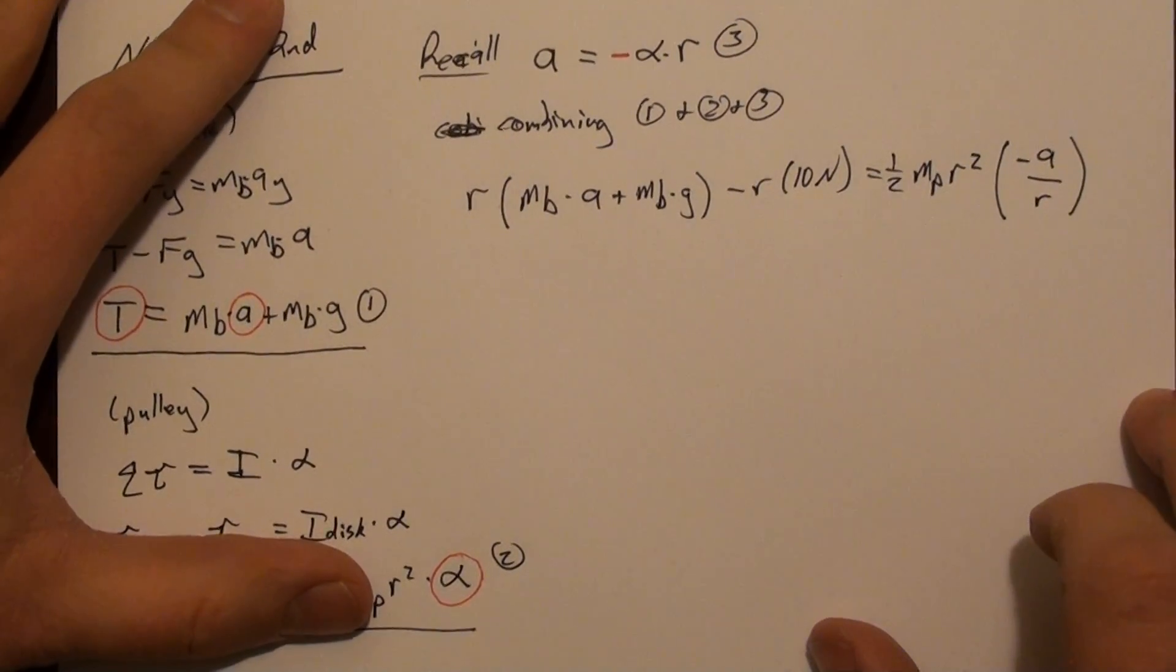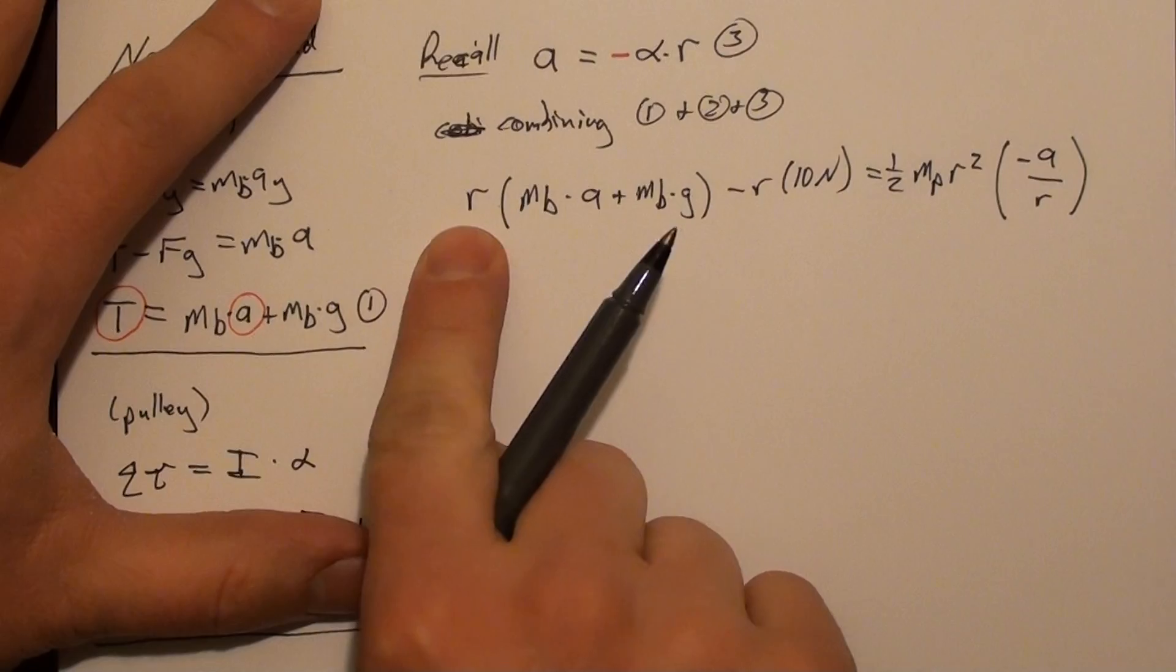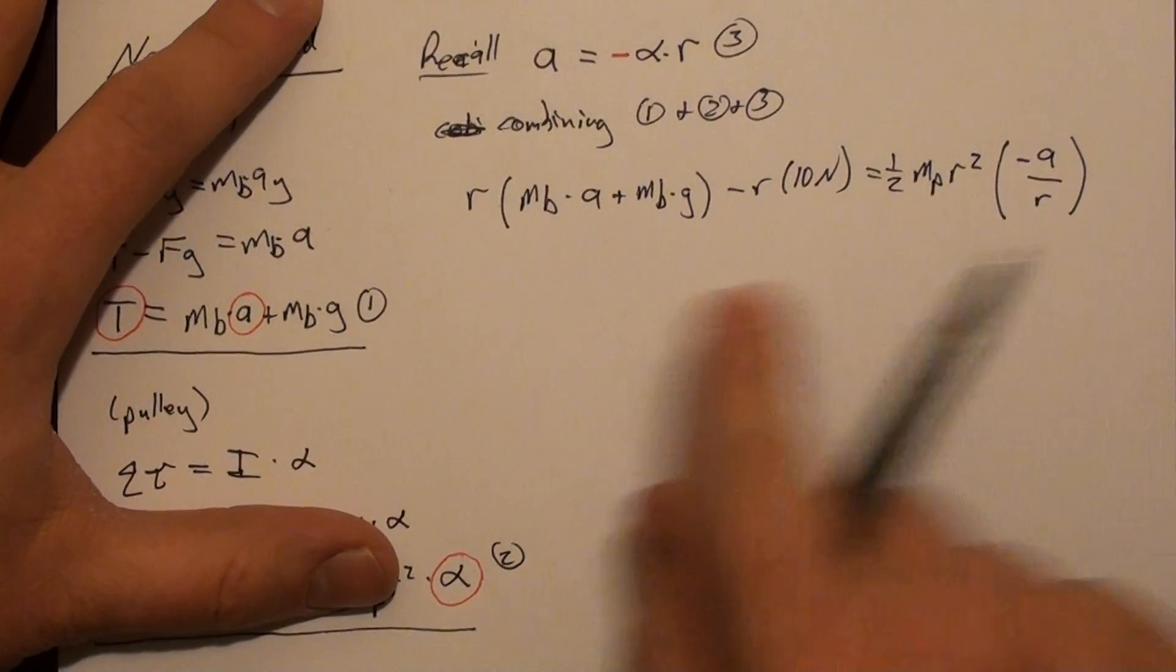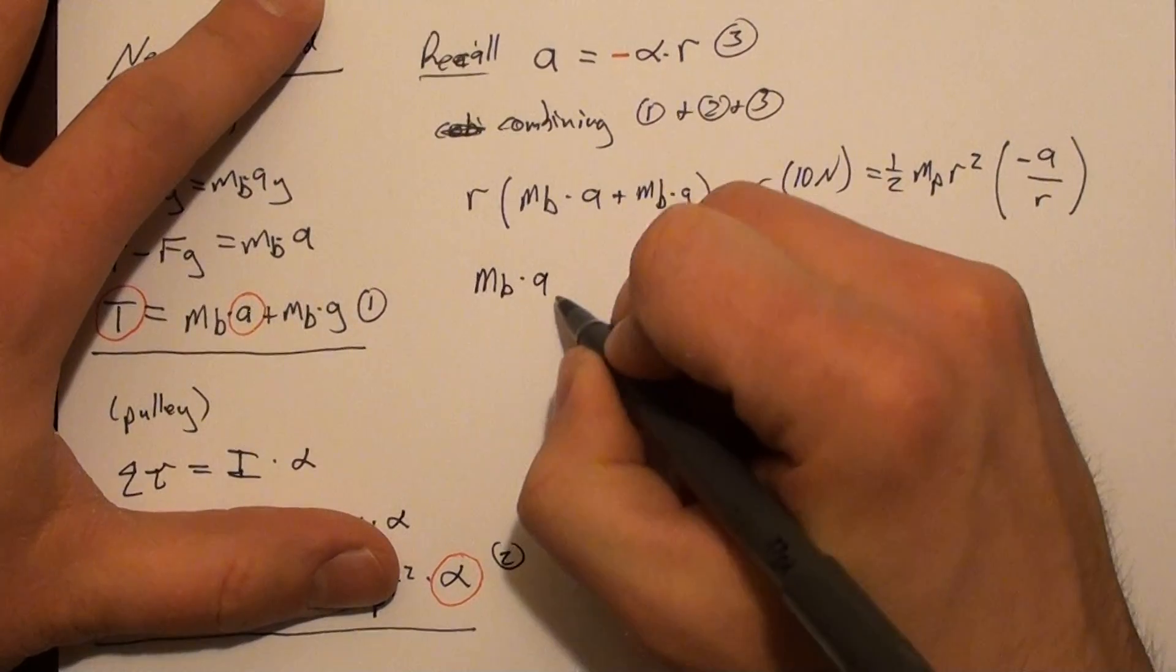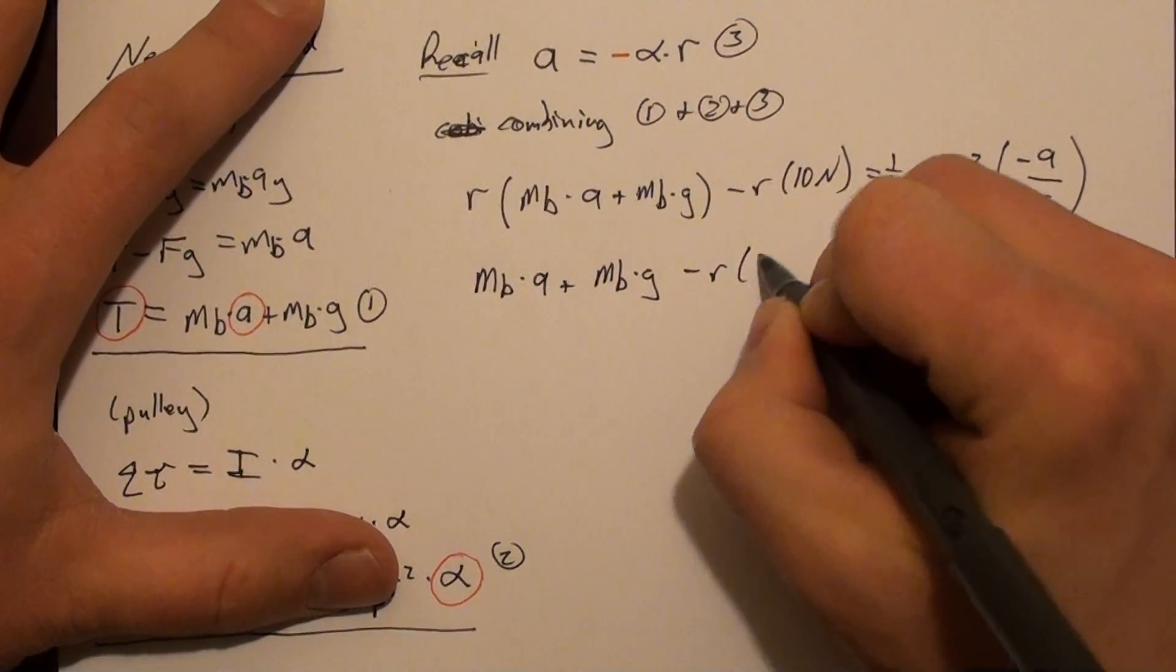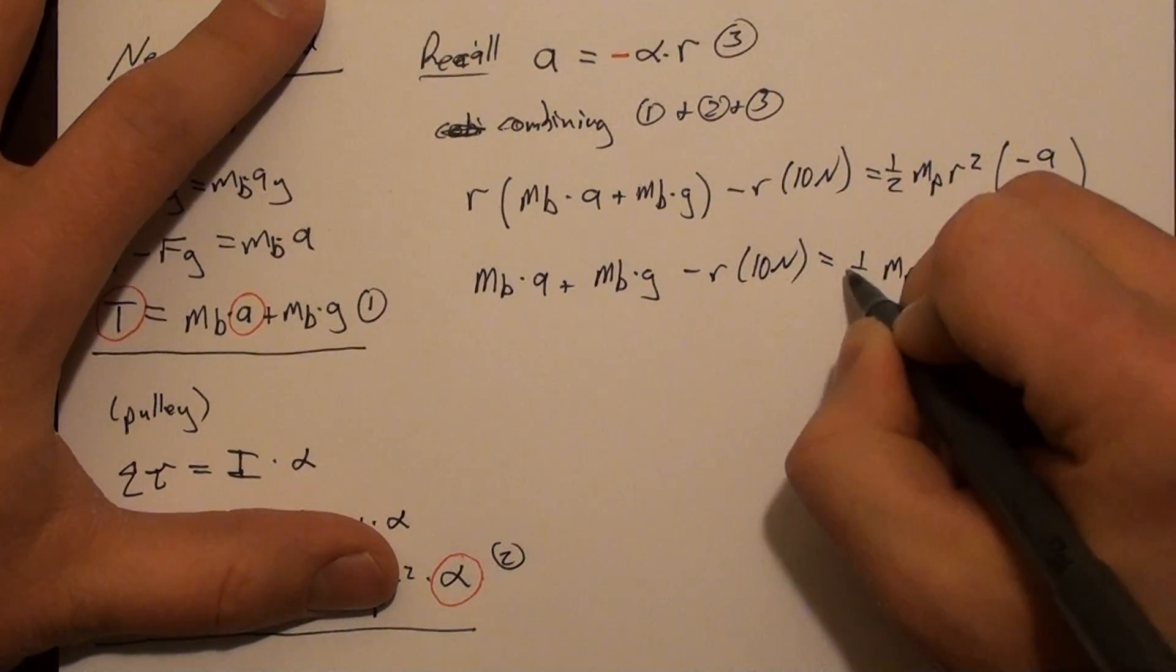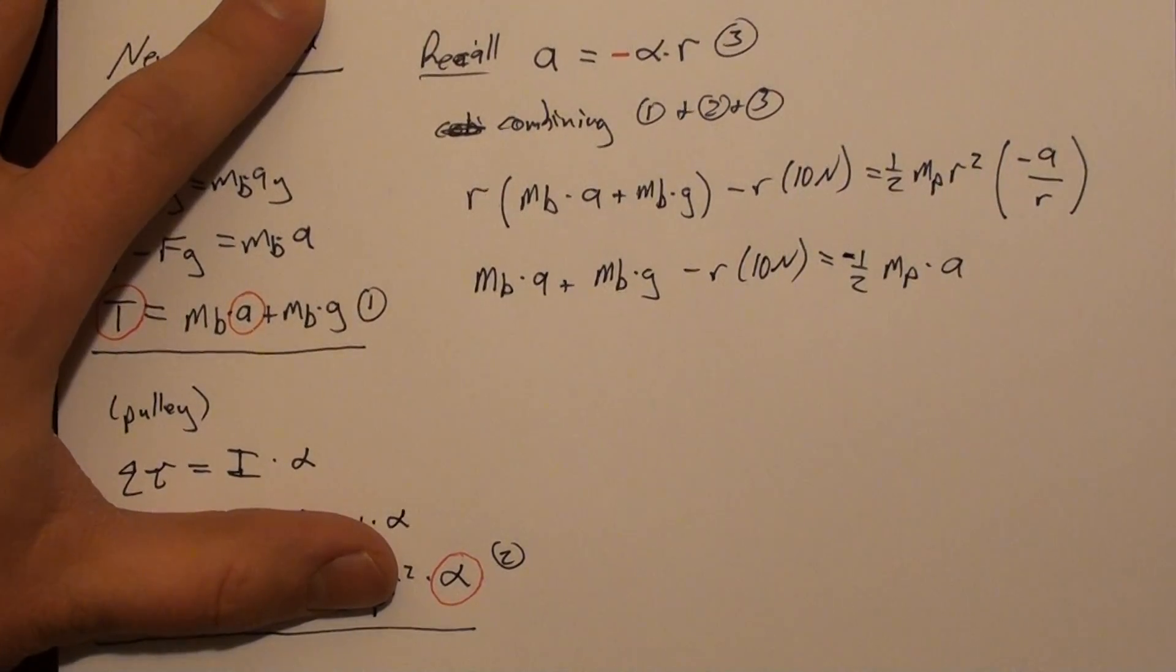So I'm going to start by dividing by r everywhere. That's going to make my life much simpler. So this r goes away. This r goes away. And this r squared goes away with this r and the one I'm dividing. So what I get is this. mb times a plus mb times g minus r times 10 newtons equals half mp times a. And there's a minus sign on that.